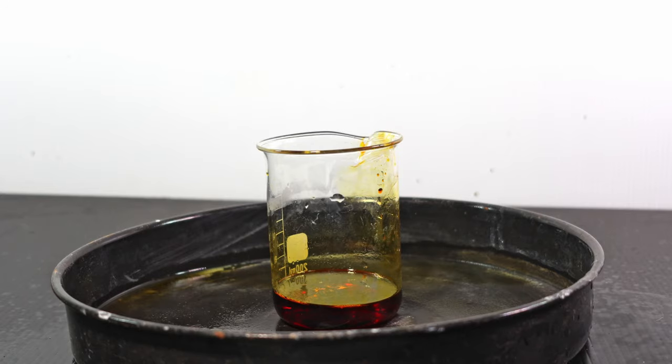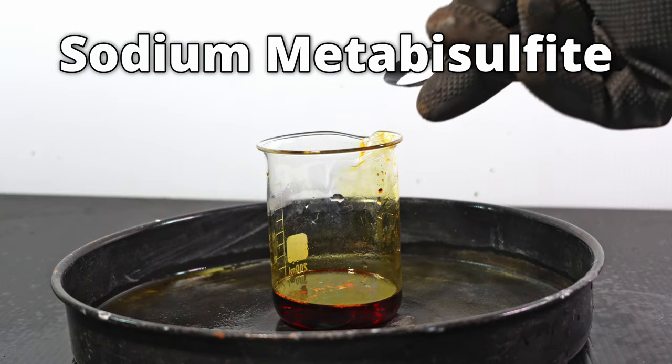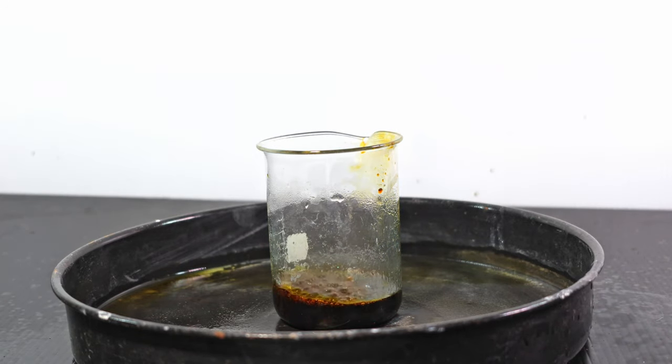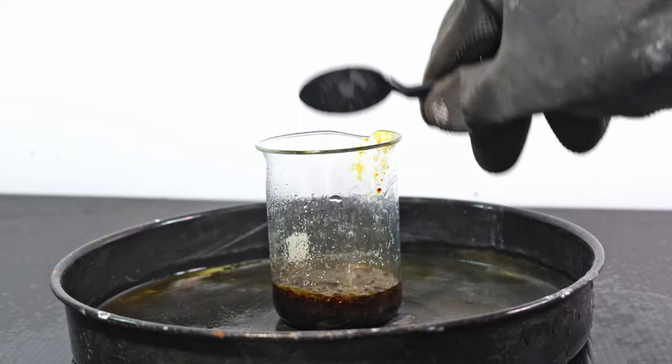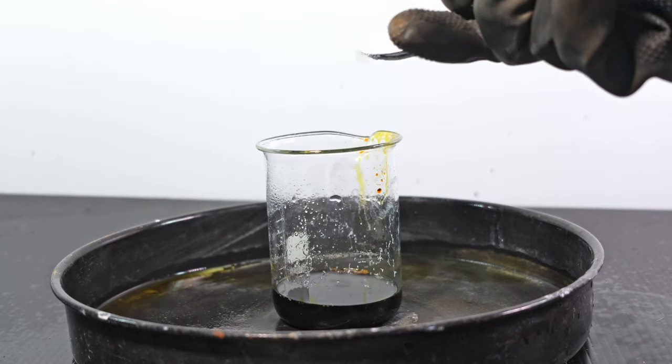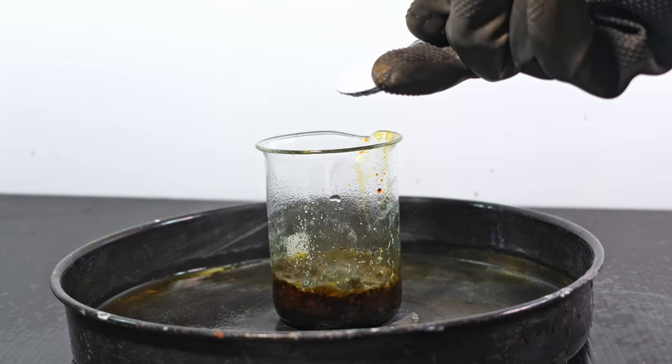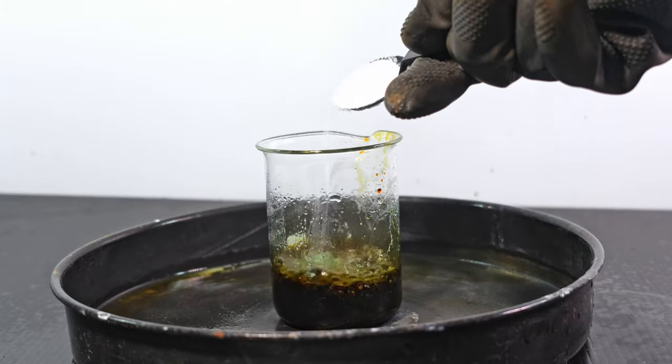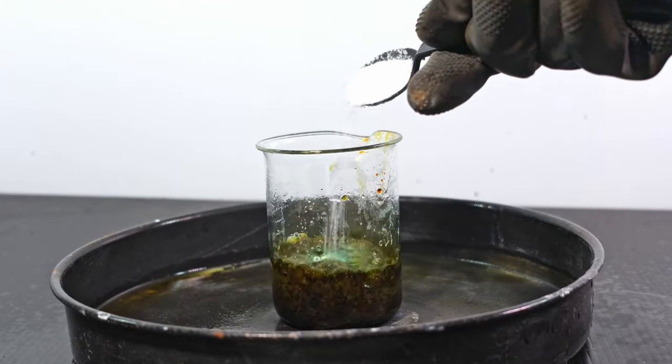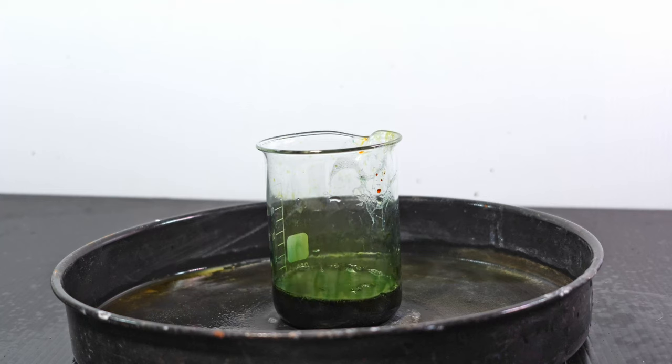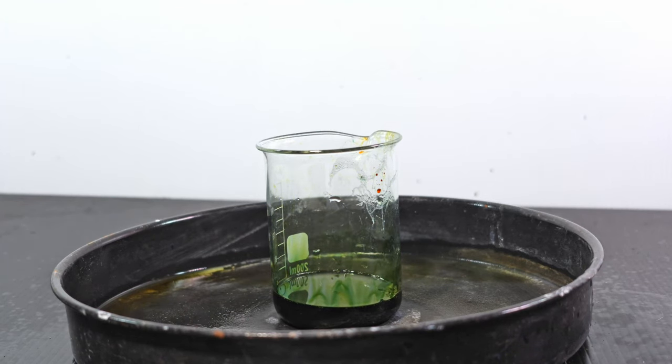In the sixth test, I react sodium metabisulfite with chromic acid. As I add more, flashes of green appear in the solution. Eventually, it all turns green. That is because sodium metabisulfite is an alkaline reducing agent. Not only does it neutralize the acid, but it also reduces chromium-6 to chromium-3.